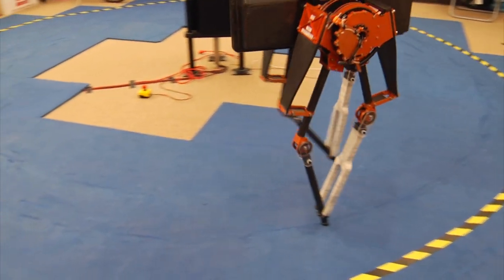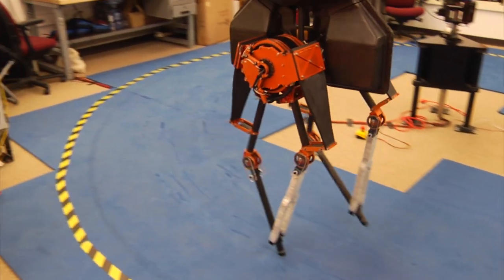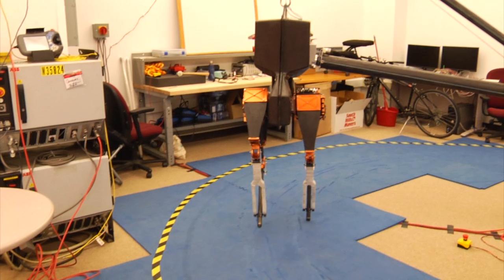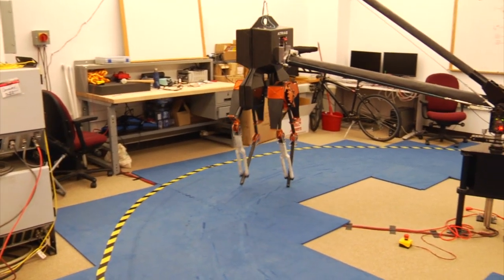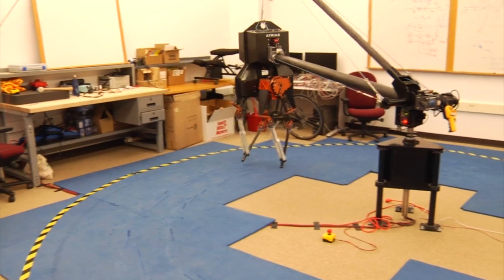The way they accomplished that at Oregon is that they made the legs extremely light, kind of like a massless spring, by making them all out of carbon fiber and using this four-bar construction design.